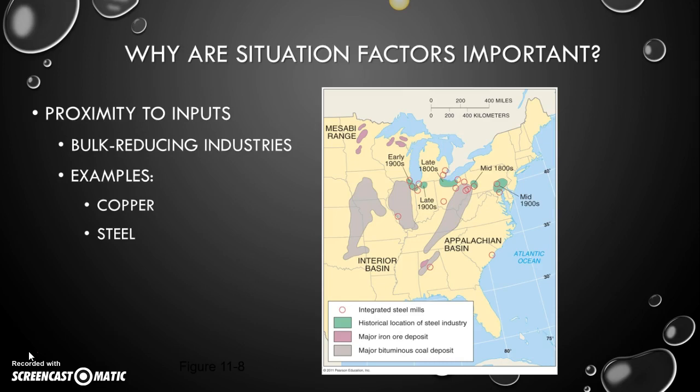As you can see, these industries are reasonably close to their inputs. These are called bulk reducing industries, meaning the final product actually weighs less and takes up less space than its original inputs. Natural resources are great examples. For instance, when you pull copper out of the ground it has all kinds of impurities. You smelt it — burning off those impurities — which reduces the weight and volume of the copper.